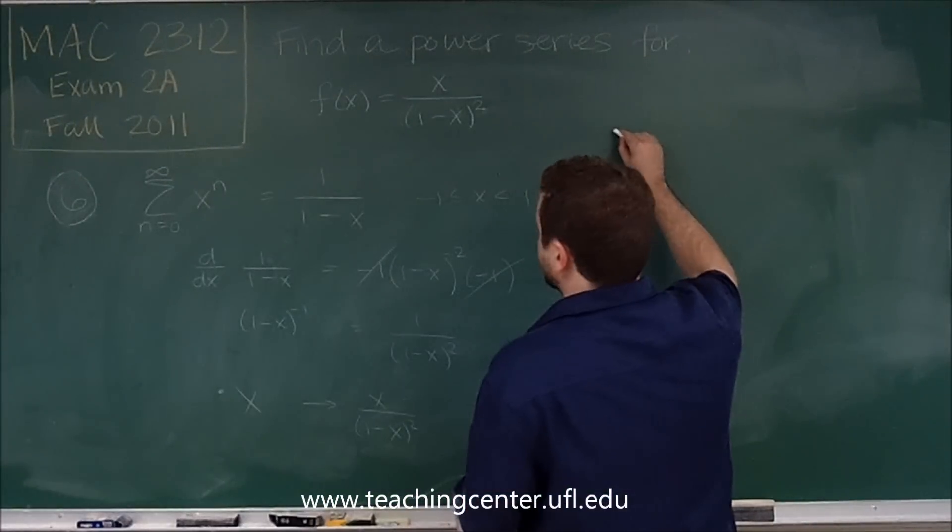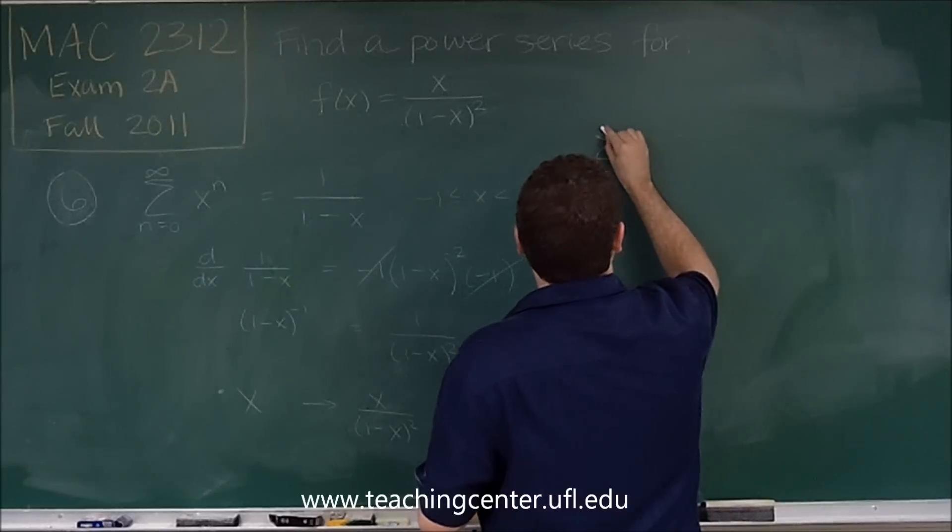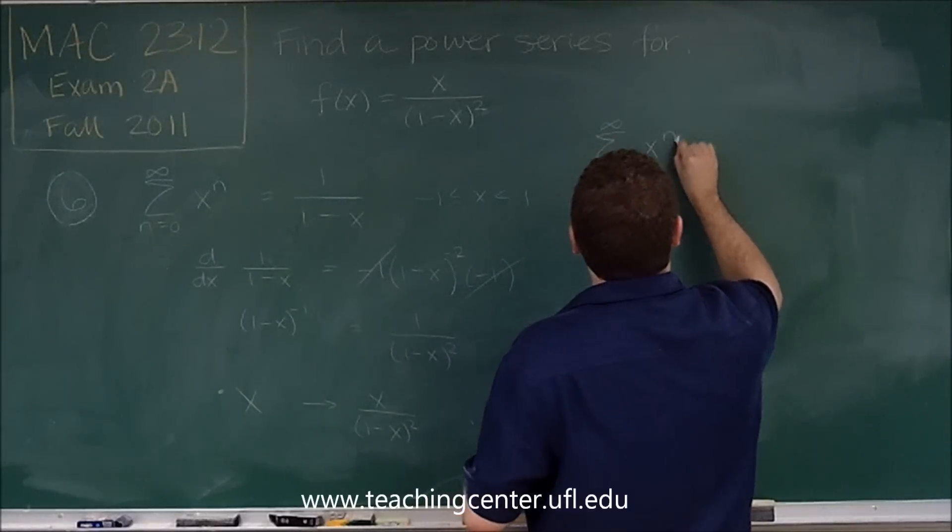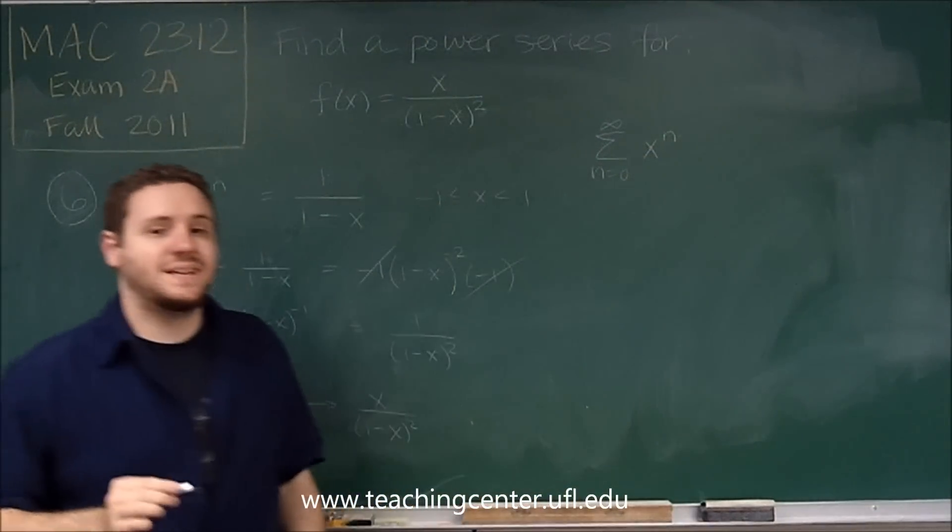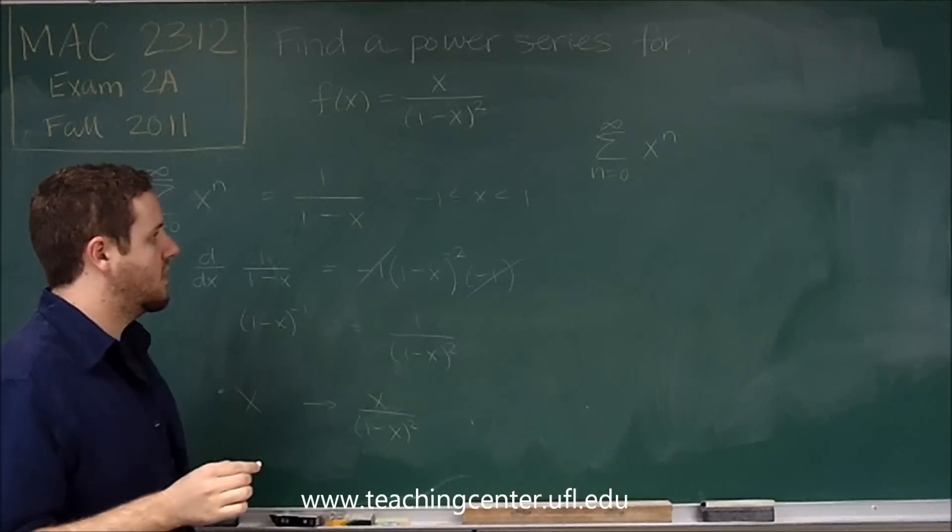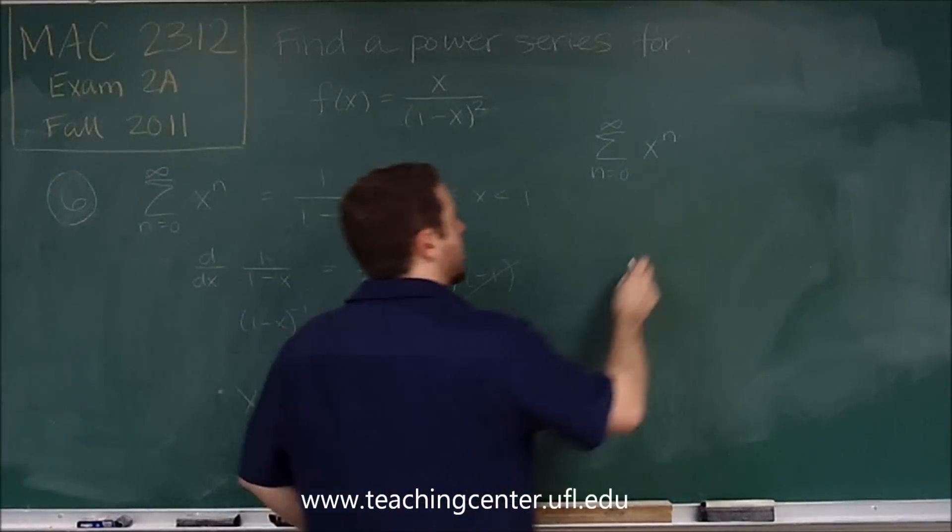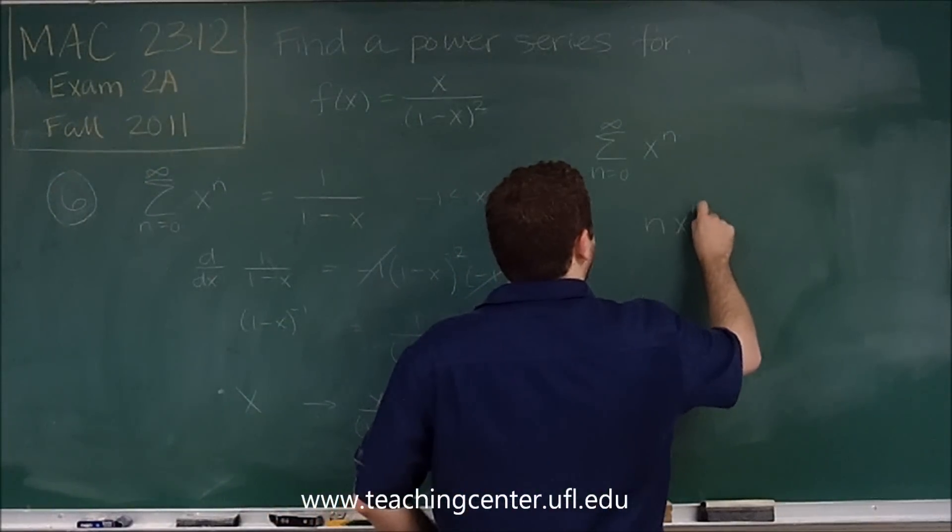So we take the series, the first thing we're going to do is we're going to take the derivative of it. So when we take the derivative of x to the n, we're going to get n times x to the n minus 1.